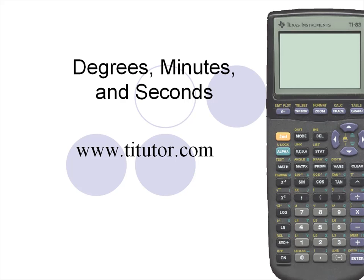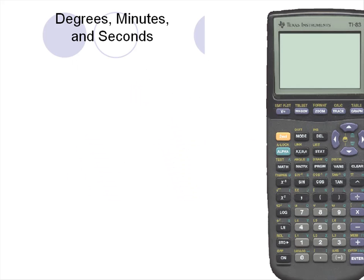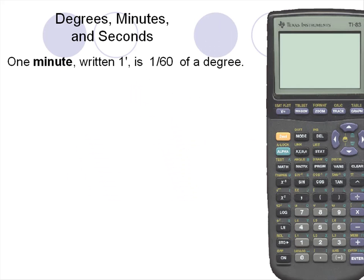Degrees, minutes, and seconds. For this video and videos similar to these, visit the website at www.titutor.com. One minute, written as one with a single tick mark, is 1/60th of a degree. In other words, 60 minutes is equal to one degree.